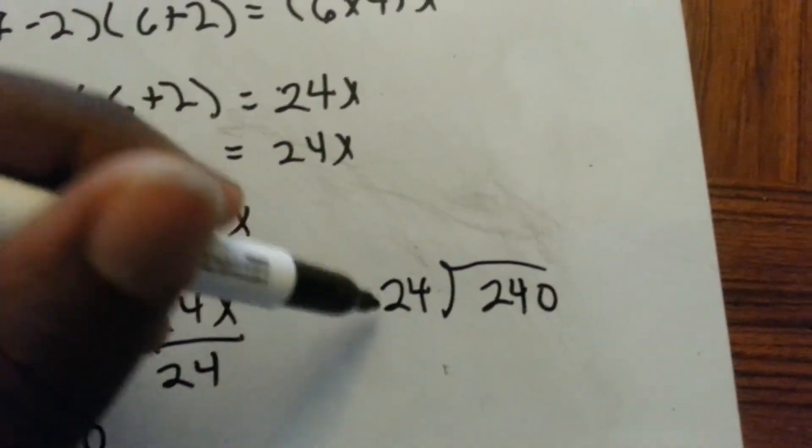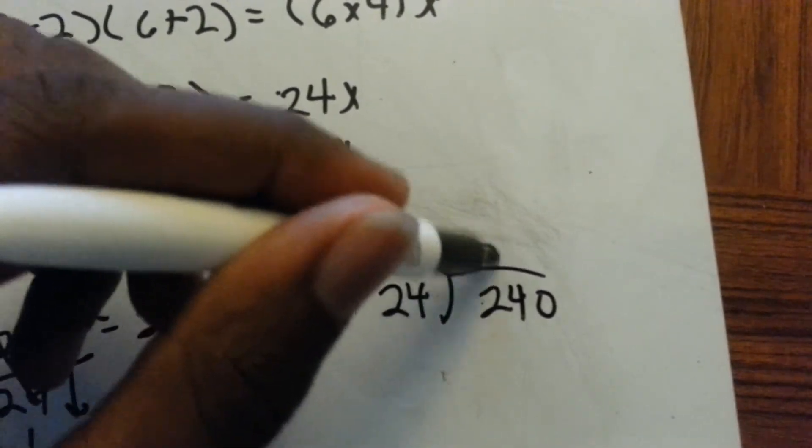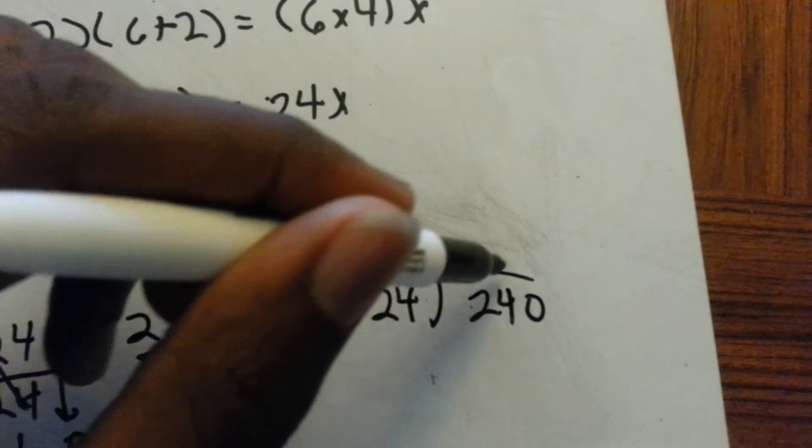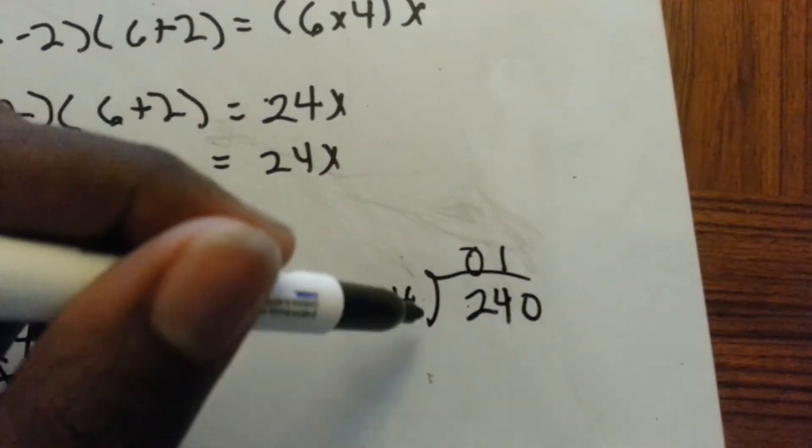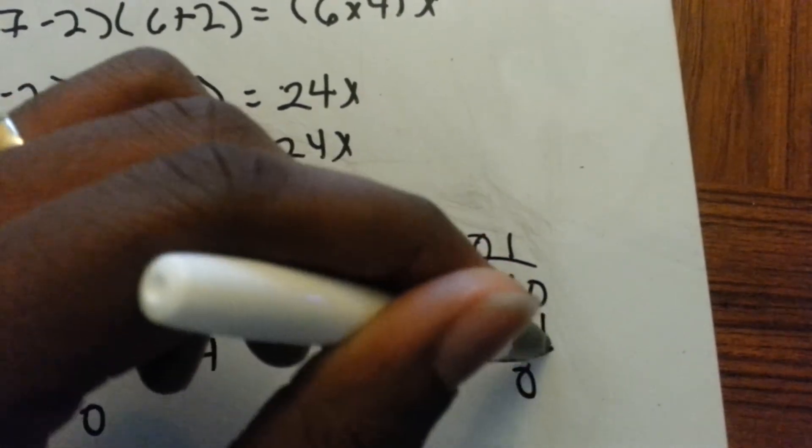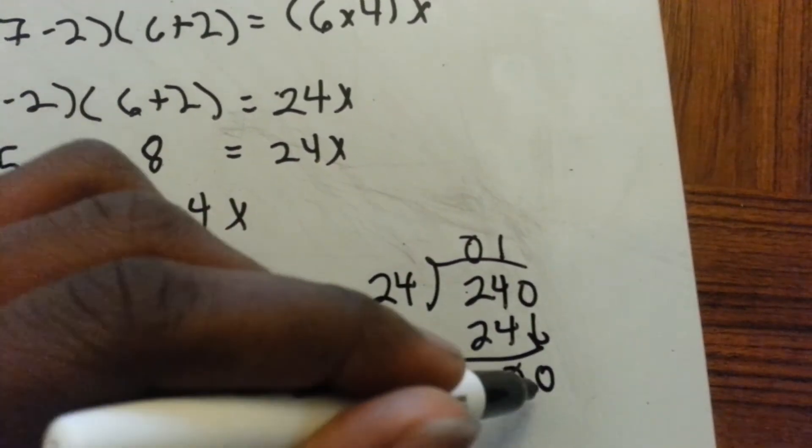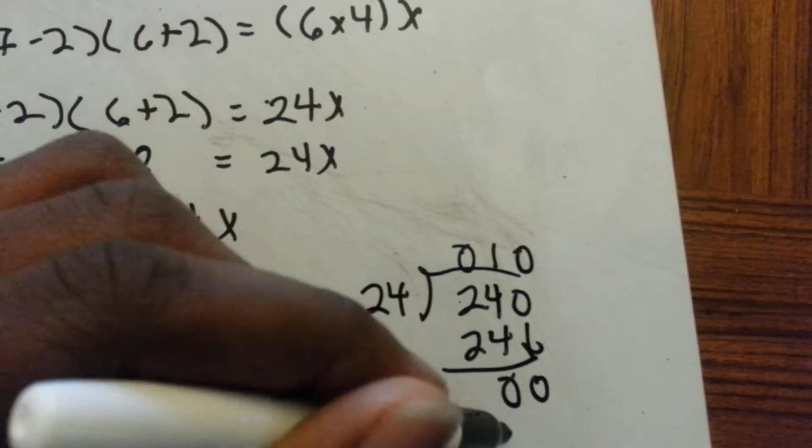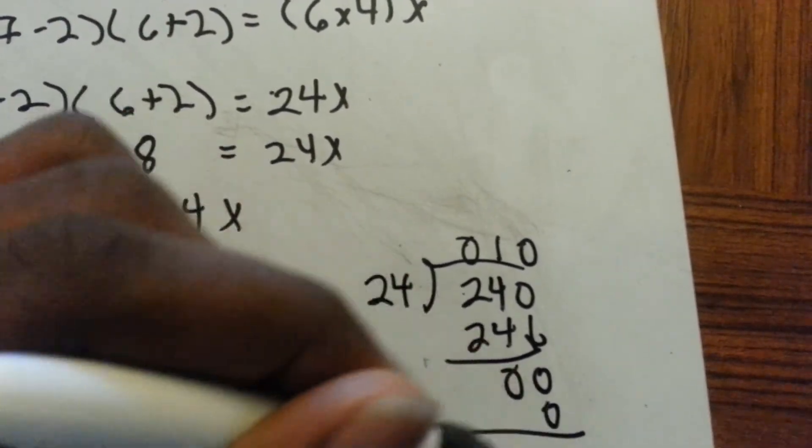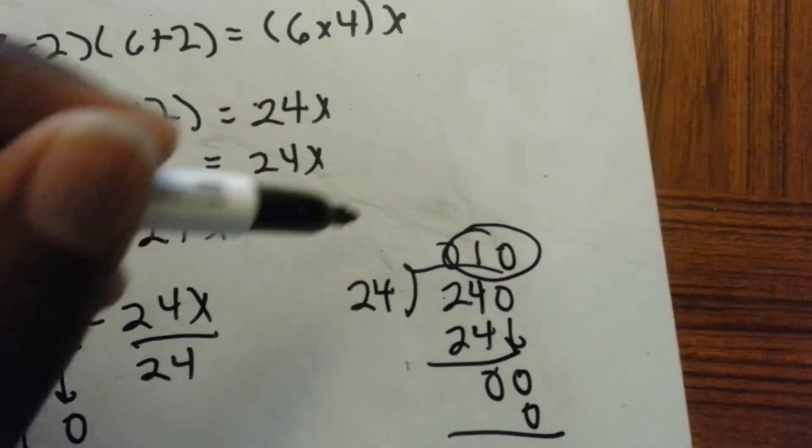And we'll do the division over here. 24 goes into two zero times. 24 goes into 24 one time. One times 24 is 24, zero, bring down the zero. 24 goes into zero, and zero times zero, zero. The answer would be 10.